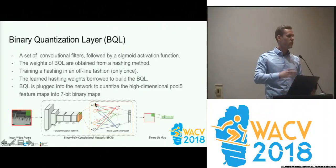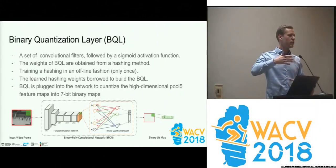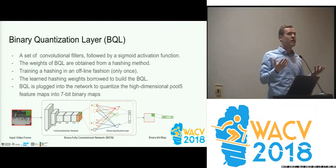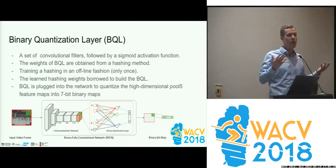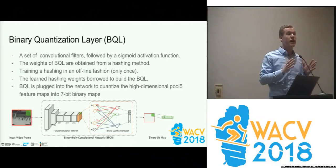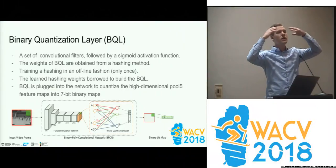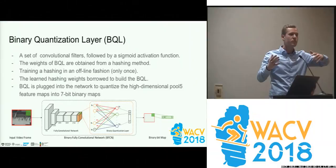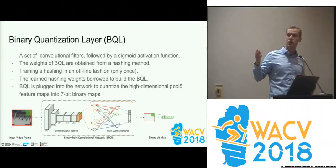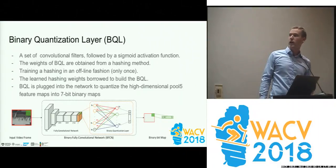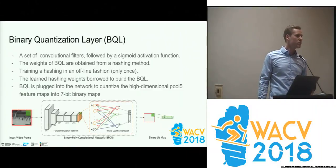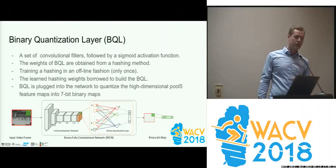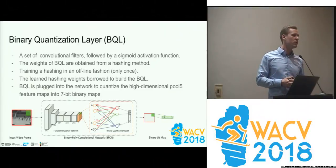There is a binary quantization layer. For example, with a dimensionality of 10, there are 10 hyperplanes, and for each point we look at which side it falls on — one side is assigned a zero, the other a one. This procedure has been suggested by others, and here it is rebuilt using neural networks, which helps filter out noise and makes the process more robust.